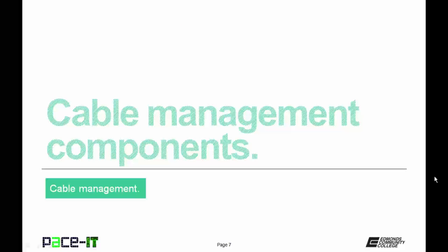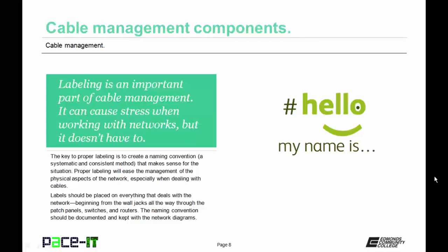Let's talk about cable management components. Labeling is an important part of cable management. It can cause stress when working with networks, but it doesn't have to. The key to proper labeling is to create a naming convention, which is a systematic and consistent method that makes sense for the situation. Proper labeling will ease the management of the physical aspects of the network, especially when dealing with cables.